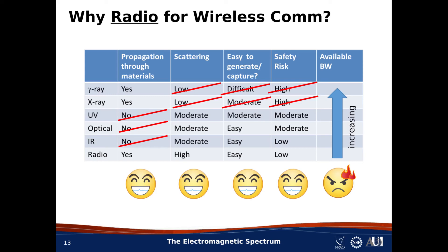Scattering is an important property for wireless communications, considered in the second column here. There must be copious scattering so that areas are not shadowed from radio waves. In this case, X-rays and gamma rays are out, and IR, optical, and UV are not very good. Radio, on the other hand, does more or less exactly what we need in terms of scattering in order to reach all the spots in some area that we would like to cover using a wireless communication system.